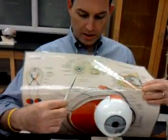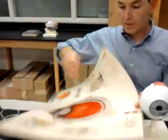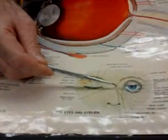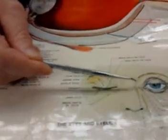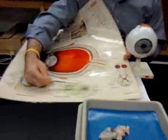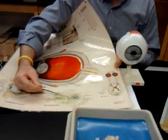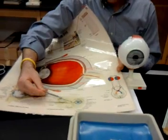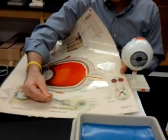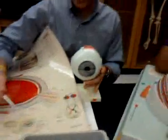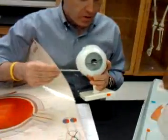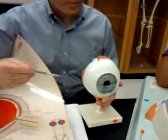If we look at the medial aspect of the eye, the medial aspect is where we're going to find the lacrimal gland. The lacrimal apparatus is on the medial side. If the model shows that tear duct — another way of saying it — you're going to know you're on the medial side.